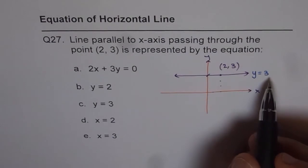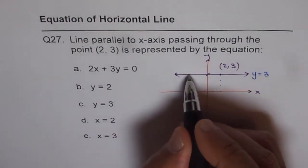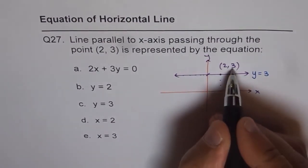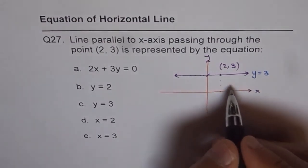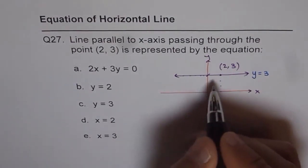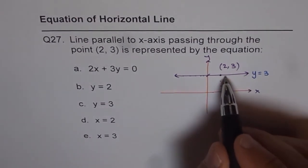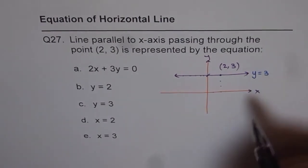Another way to look into it is that if you consider any point on this line, y value remains 3. x may change, x is all real numbers, but y value remains 3. And that is another reason to give its equation as y equals to 3.